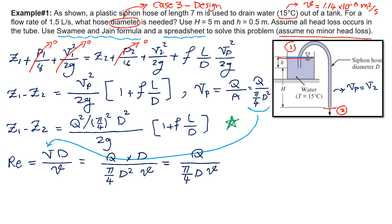We are going to use Swamy and Jain equation. The resistance factor, based on Swamy and Jain equation, can be calculated as 0.25 divided by the quantity log of Ks over 3.7D plus 5.74 over Reynolds number to the power 0.9, and the whole thing is to the power 2.